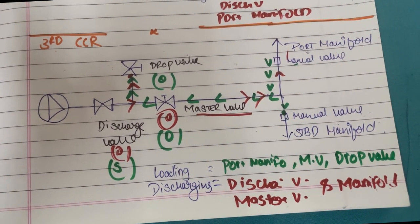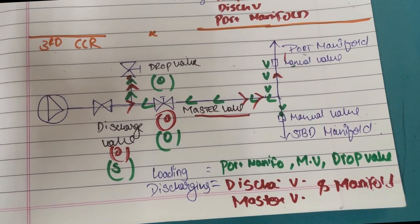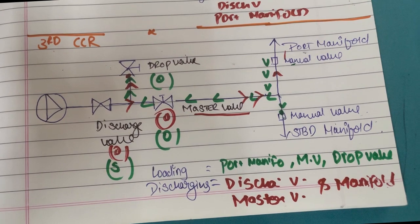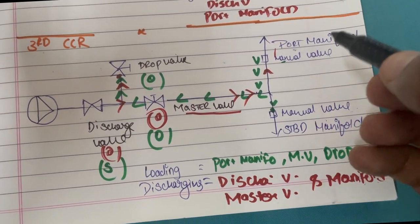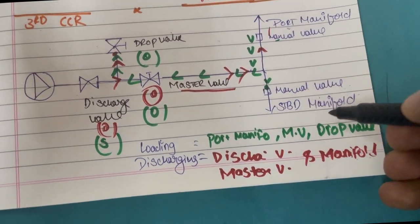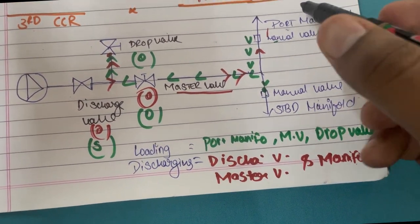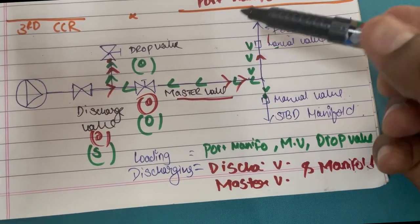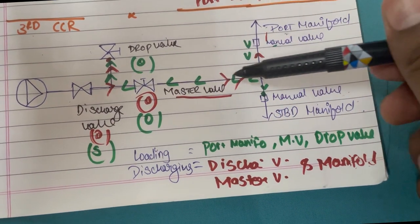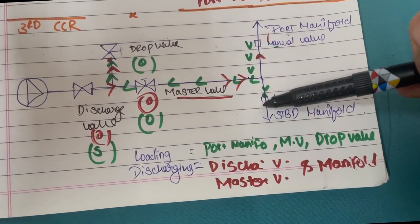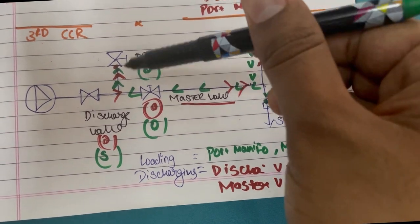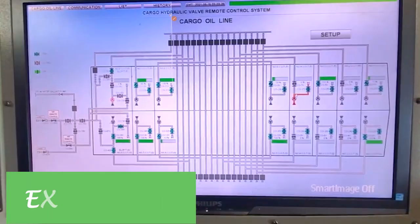Now that we understand this on paper, it will be easy to understand the different CCR screens and panels. The port side manifold was just an example — if you are alongside starboard side, you open the starboard manifold and keep the port one shut. The cargo would come from there and you can discharge or load accordingly.